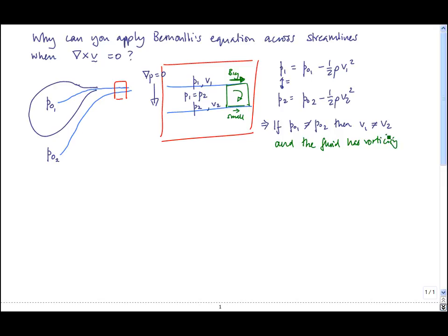So what we get is that vorticity implies that there is a stagnation pressure difference between the streamlines.